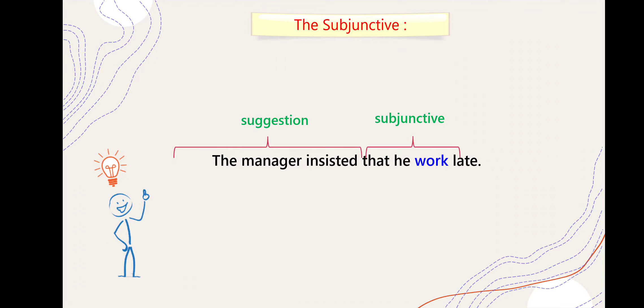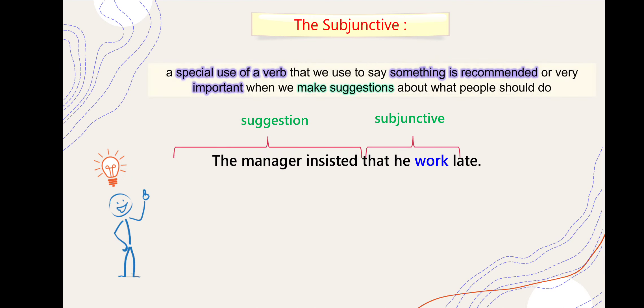The manager insists that he work late. هنا عندنا subjunctive - a special use of the verb that we use to say something is recommended. يعني زي ما تقولي اقتراح أو توصية أو شيء مهم جداً. When we make suggestions about what people should do, لما تقترحي إيش لازم يسووه أو تقولي إن شيء مهم، لازم الفعل يكون مجرد في الجملة الثانية. شايفيها 'work' - هنا الفعل مجرد، ما أضفنا له السين.